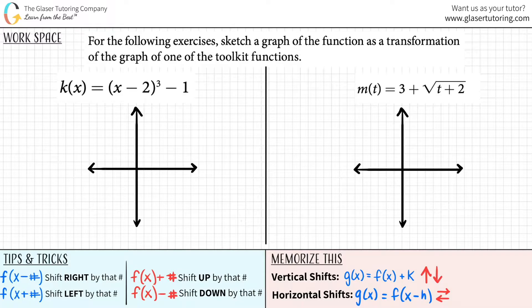For each of the following exercises, sketch a graph of the function as a transformation of the graph of one of the toolkit functions. If you're using the OpenStax textbook, the toolkit functions can be found in Chapter 1, Section 1. I have a link in the description if you want to look at those textbooks. However, I'm just going to show you guys how to get to original functions and just memorize what they look like. It's very simple.